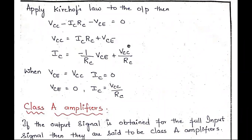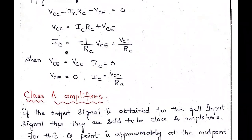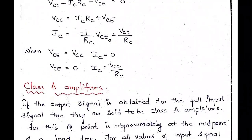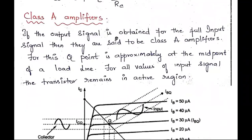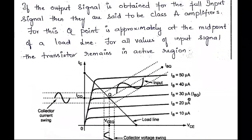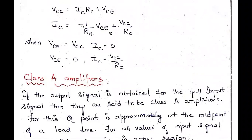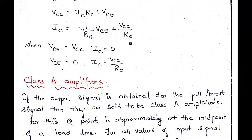Considering the output characteristics of the transistor where the x-axis is VCE and the y-axis is IC, the equation IC = minus(1/RC) * VCE + VCC/RC is in the form of what? Does it represent a parabola, hyperbola, or straight line? Find out and tell me in the next class.